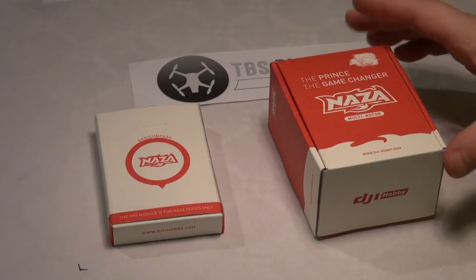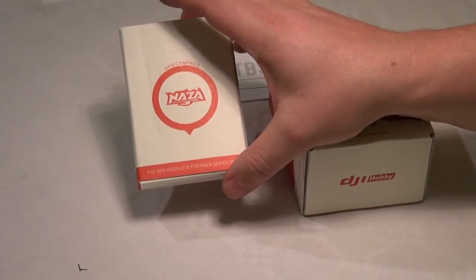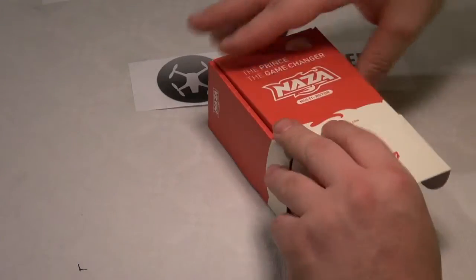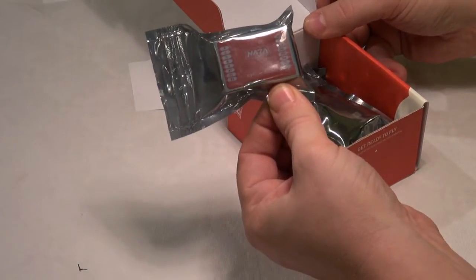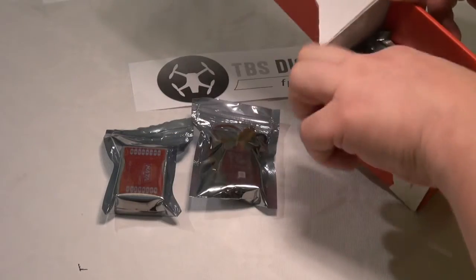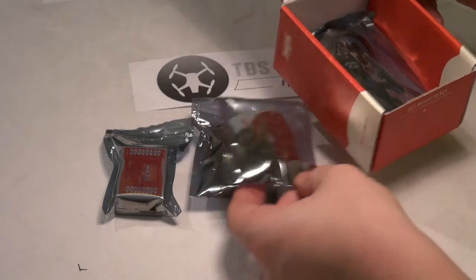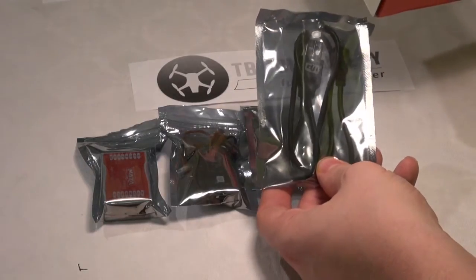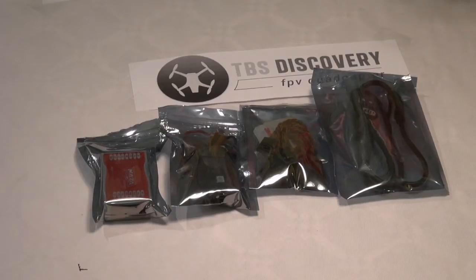Okay, let's have a closer look at the NAZA multi-rotor controller and the GPS and compass. I'll put the compass aside. We will open the NAZA controller box, which consists of the NAZA controller, the vSense unit, one bag of servo cables for hooking up your receiver, and finally one bag with a USB cable. So that's what's in the box for the NAZA multi-rotor controller.